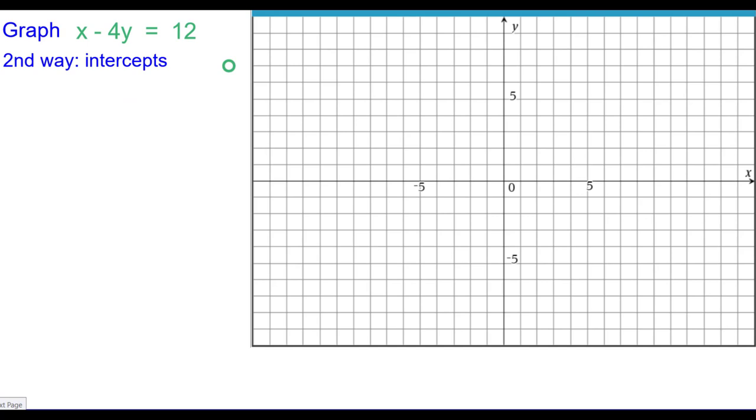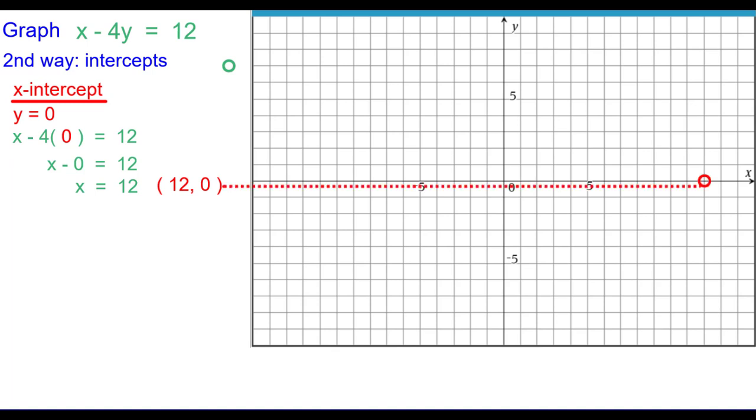The second way is using the intercepts method. The x-intercept is found when the y coordinate is 0. So we'll substitute 0 in for y and then solve for x. Doing that, we get x minus 0 equals 12 or x equals 12. So our ordered pair is 12, 0 and we'll plot that. That point is our x-intercept.